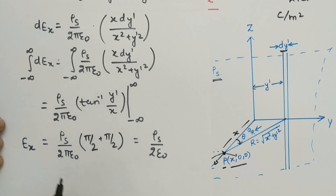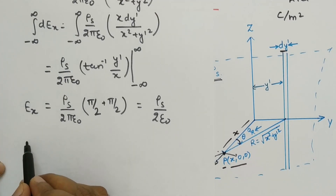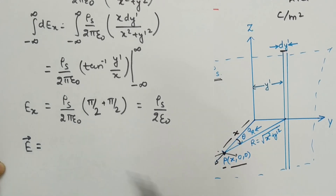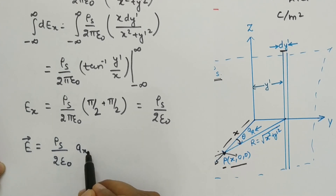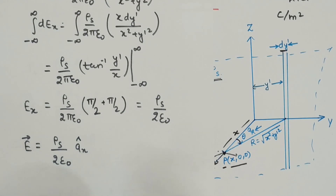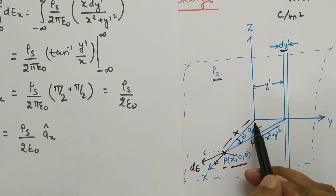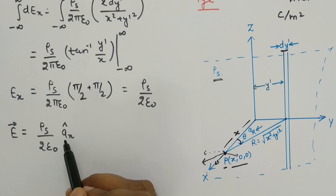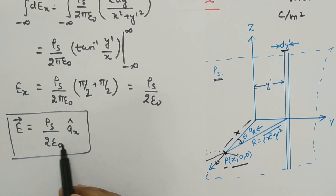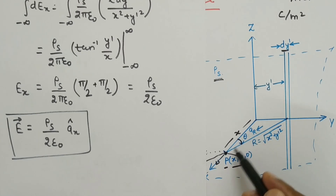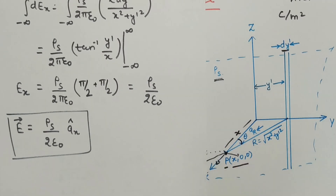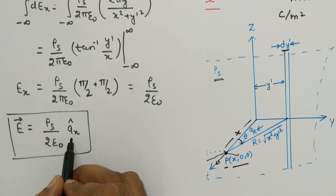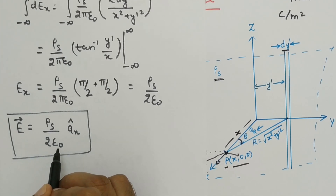This is our Ex, which is the total field. The total electric field intensity in the positive X direction is E = (ρs / 2ε₀) aₓ. Importantly, this electric field intensity does not depend on X, meaning it is constant throughout one side of the sheet.